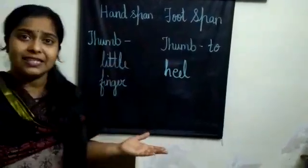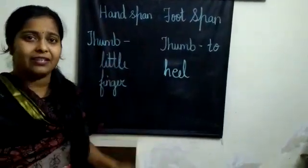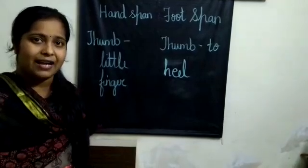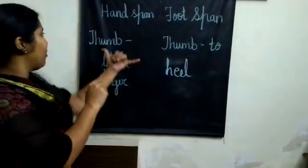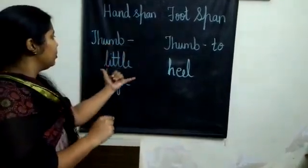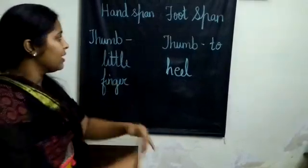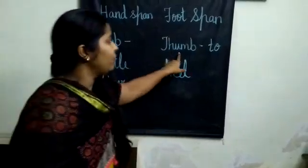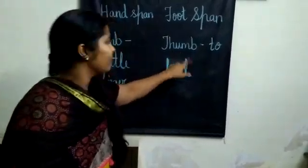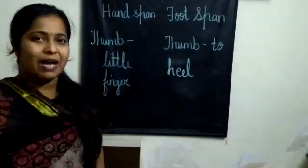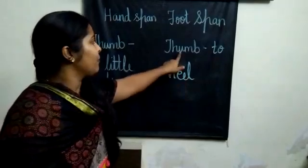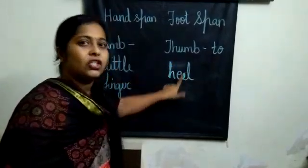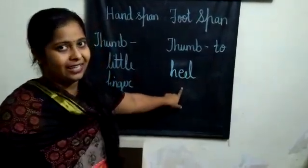What is a hand span? A hand span is the distance from your thumb to your little finger. And what is a foot span? A foot span is the distance from your thumb to your heel.